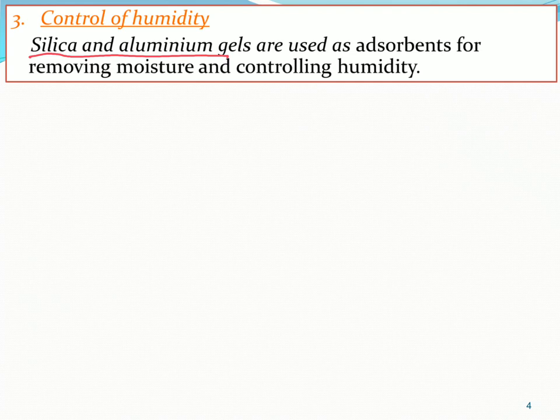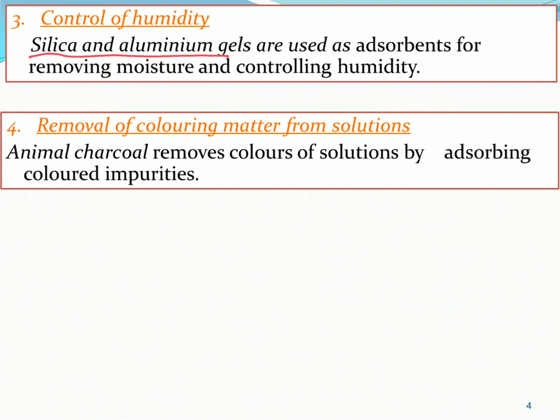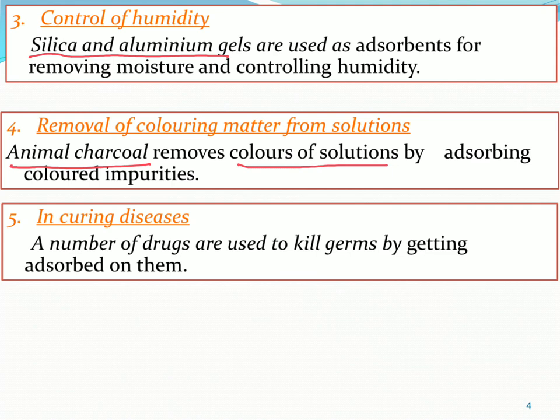जब कोई नया suitcase, briefcase, या bag खरीदते हो तो उसमें एक packet के अंदर कुछ gel-like material रखा रहता है — it is only to absorb moisture from humidity, atmospheric moisture को absorb करने के लिए। Third application: removal of coloring matter from solution। अगर solution में coloring matter हो, तो उसको adsorb करने के लिए हम adsorbent use करते हैं। Generally animal charcoal removes colors from solution — वो coloring particles को adsorb कर लेता है।